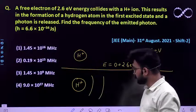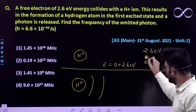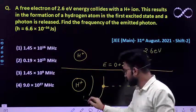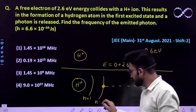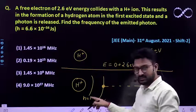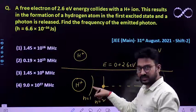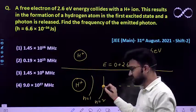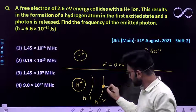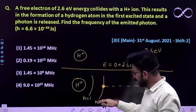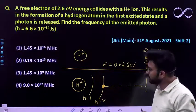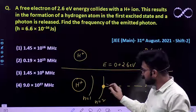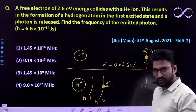Now they collide and a hydrogen atom is formed with the electron in its first excited state. The electron moves from outside into the atom. Here N=1 is the ground state and N=2 is the first excited state, so the electron will settle at N=2.